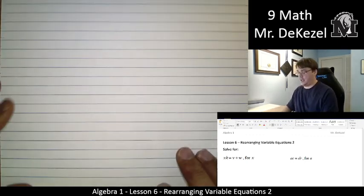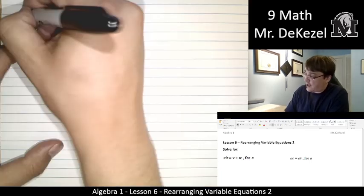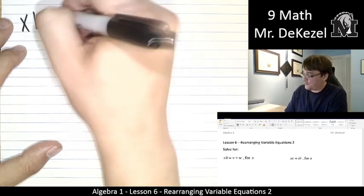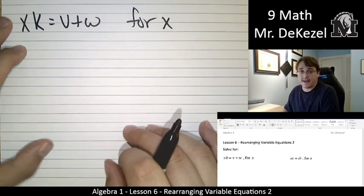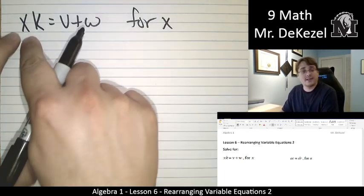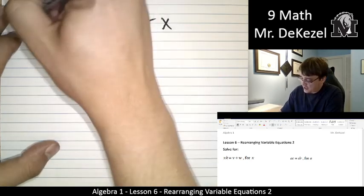So let's do the first problem. We have xk equals v plus w, and we're going to be solving for x. That means we want to get x all by itself.